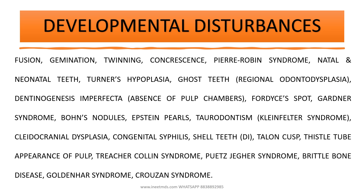You should know about ghost teeth — the other name is regional odontodysplasia; just knowing the name is sufficient. Then dentinogenesis imperfecta and its types, four DICE spots, Gardner's syndrome and Peutz-Jeghers syndrome, and the difference between the polyposes in each. Then Bond's nodule, Epstein pearls, dental lamina cyst of the newborn, and the location differences between Bond's nodule and Epstein pearls. Then taurodontism, its classification, and the associated syndrome — Klinefelter syndrome. Just the name is enough.